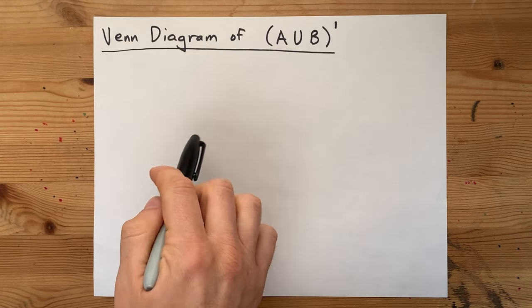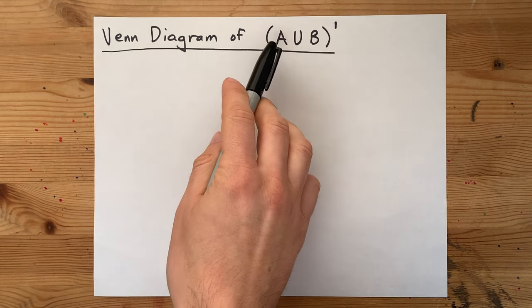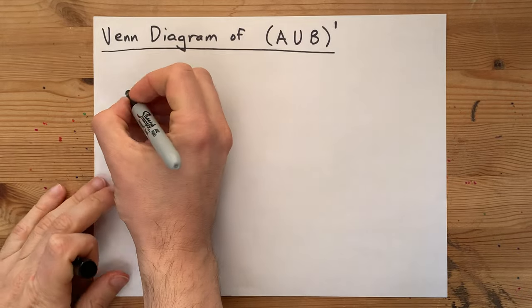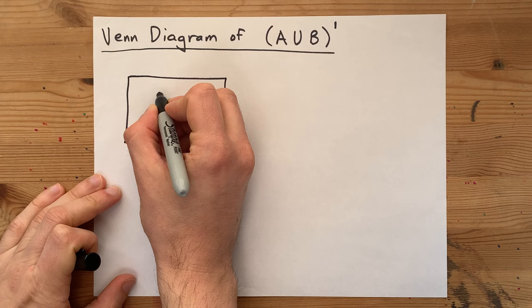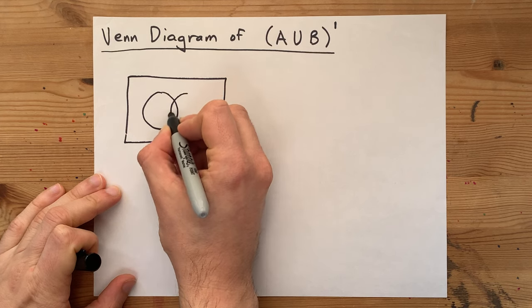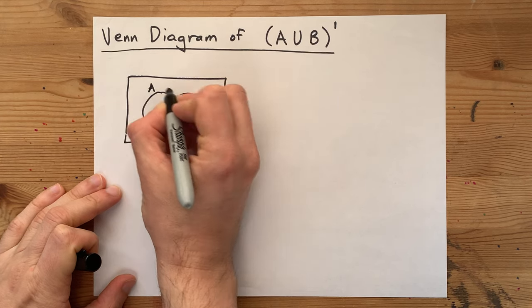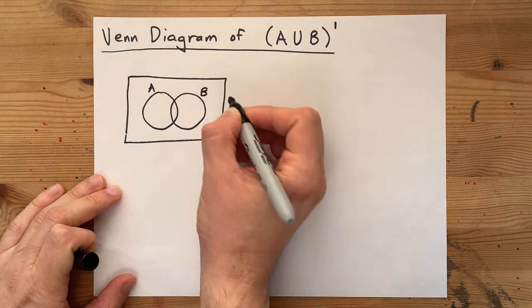To draw the Venn diagram of the complement of A union B, you should probably draw yourself a Venn diagram for A and B overlapping in the first place. I'm going to give myself two circles. One of them is event A, and one of them is event B.